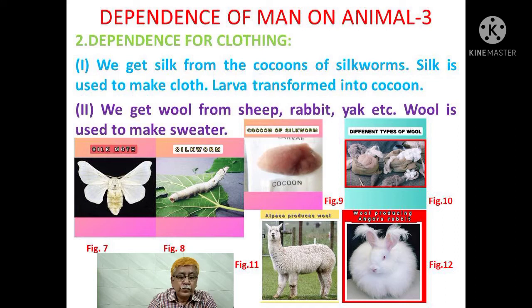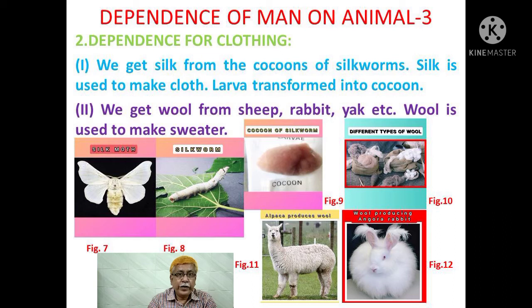Number 2, dependence for clothing. One, we get silk from the cocoons of silkworms. Silk is used to make cloth. The larva transforms into a cocoon. Two, we get wool from sheep, rabbit, yak, etc. Wool is used to make sweaters. Here you have figures 7 through 9: adult silk moth, silkworms, and cocoon of silkworms.